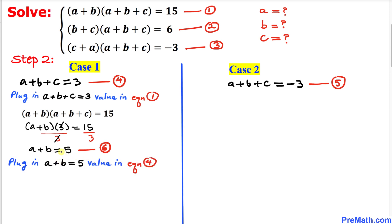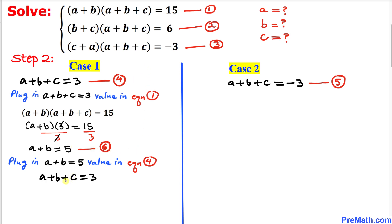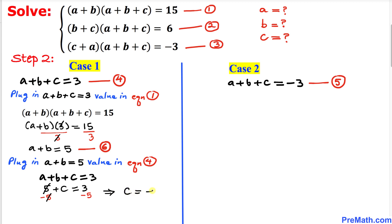Now we plug a+b = 5 into equation 4: 5 + c = 3. Subtracting 5 from both sides, c = -2.